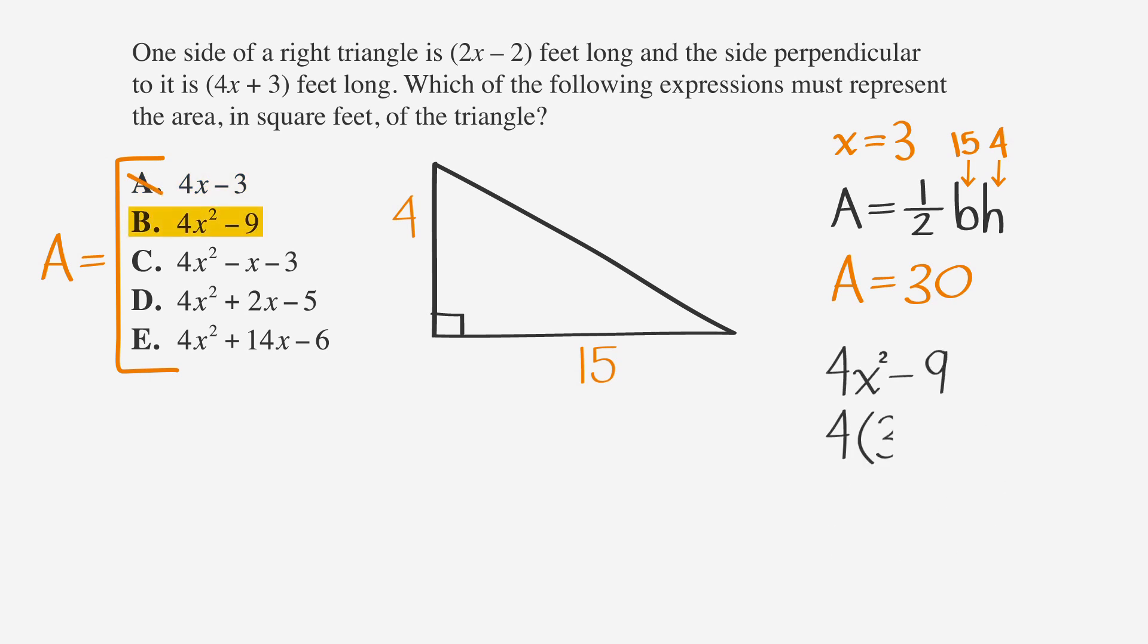Choice B would be 4 times 3 squared minus 9. That's 27, not 30. Let's also cross out choice B. Now, let's give choice C a try. When x equals 3, 4 times 3 squared minus 3 minus 3 is 30. Choice C it is.